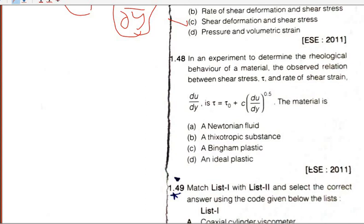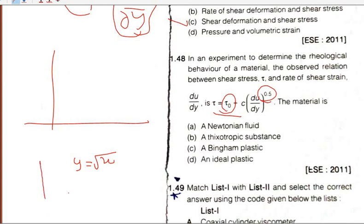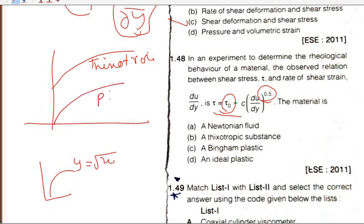Question 58: In an experiment to determine the rheological behavior of a material, the observed relation between shear stress tau and the rate of shear strain has a constant of 0.5. Under root tau equals under root of shear rate — this corresponds to a pseudoplastic behavior.